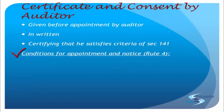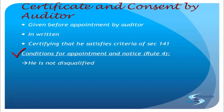Now when we say the conditions have to be fulfilled — the conditions are prescribed in the rules, specifically Rule 4. Basically we have four conditions. Number one is that the auditor is not disqualified — meaning the individual or firm going to be the auditor is eligible to become an auditor of the company, is eligible for appointment and is not disqualified for appointment under the act.